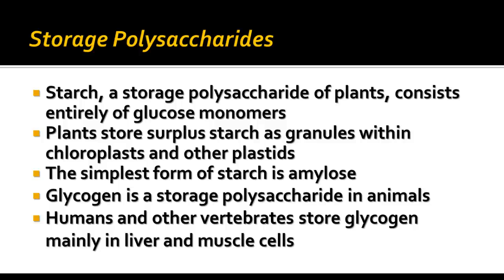There are storage polysaccharides. Starch is what you find in potatoes, and it is made entirely of glucose monomers. The starch is stored in granules within the chloroplast and within other plastids in plant cells. The simplest form is called amylose, and it is broken down by an enzyme in your mouth called amylase. The storage polysaccharide in animals is called glycogen, while the one in plants is called starch or amylose.